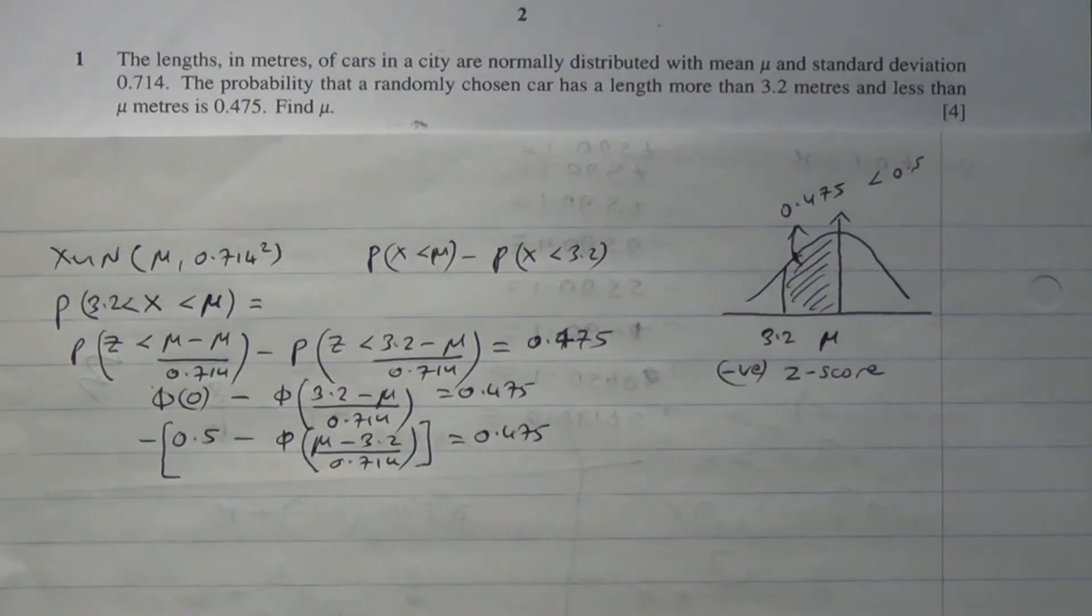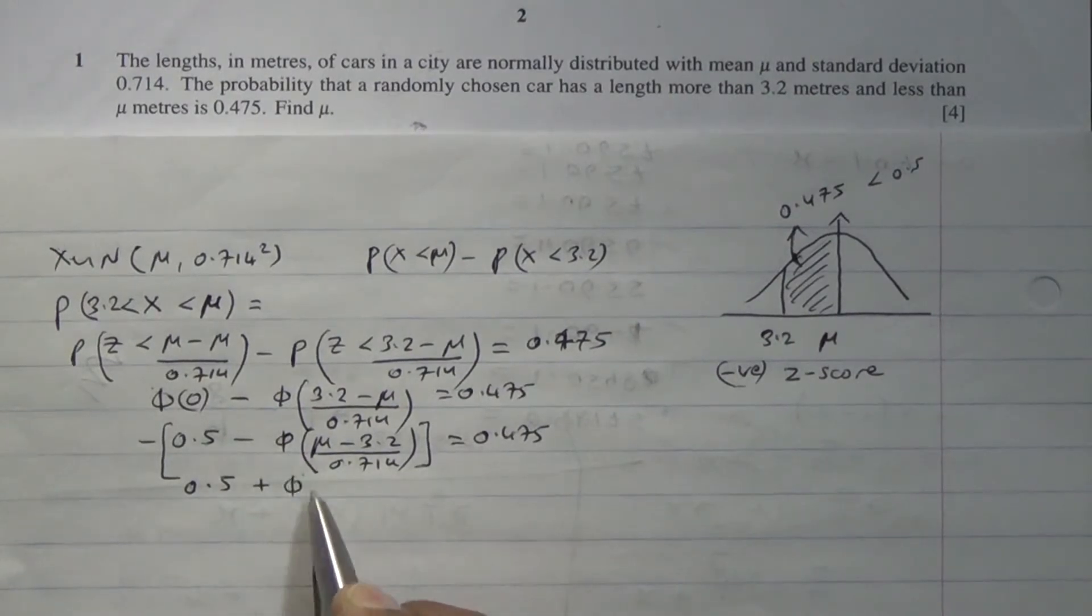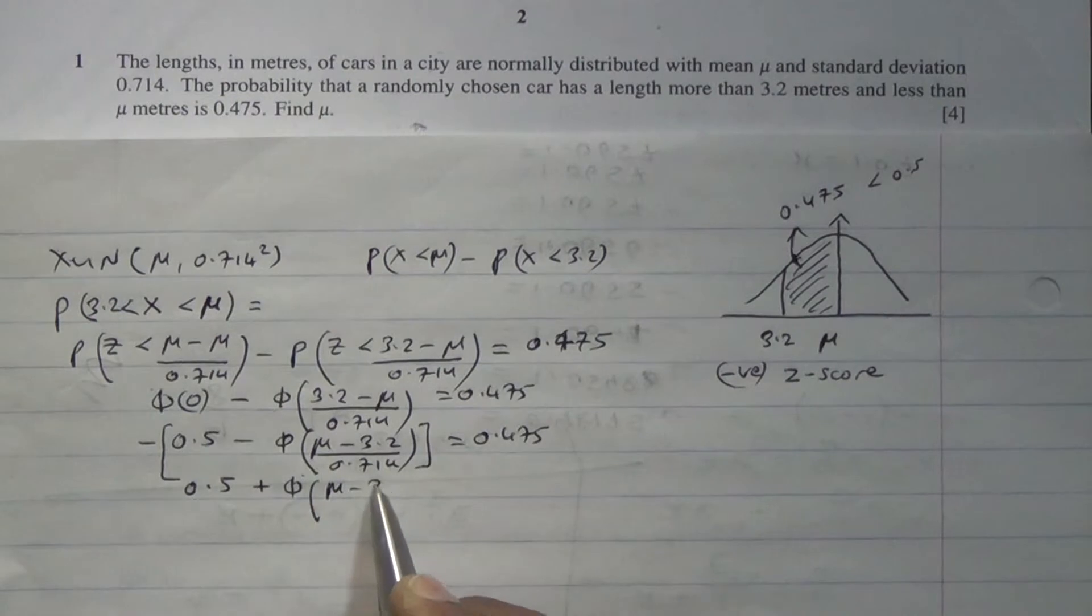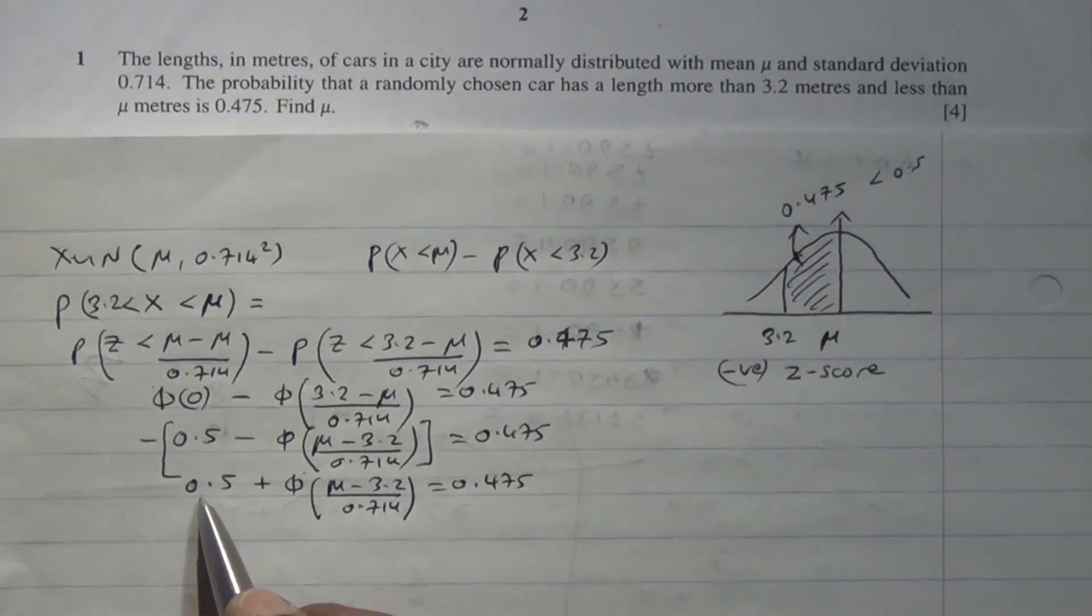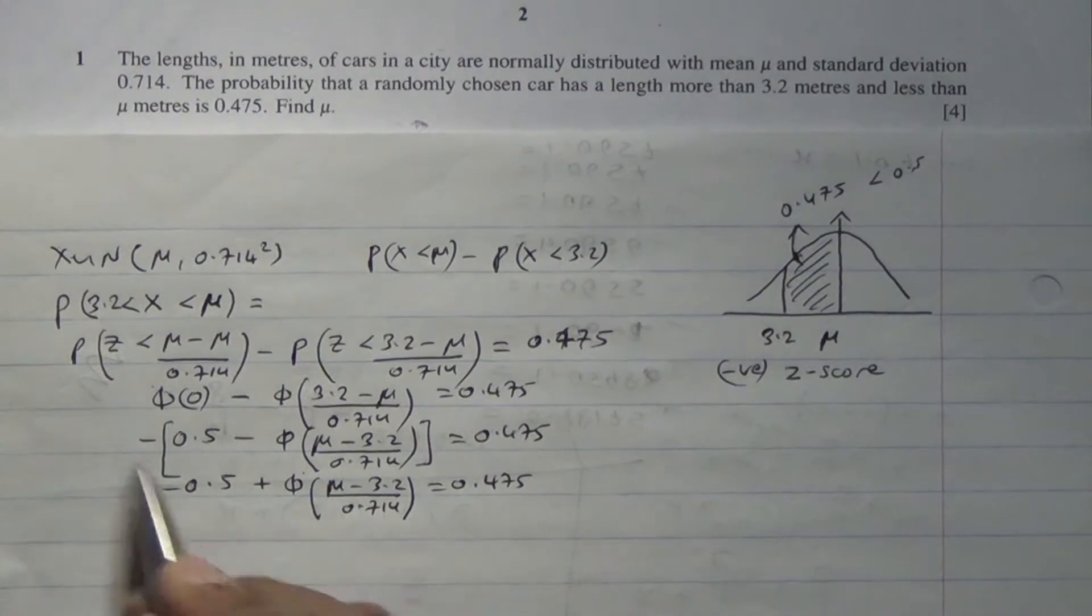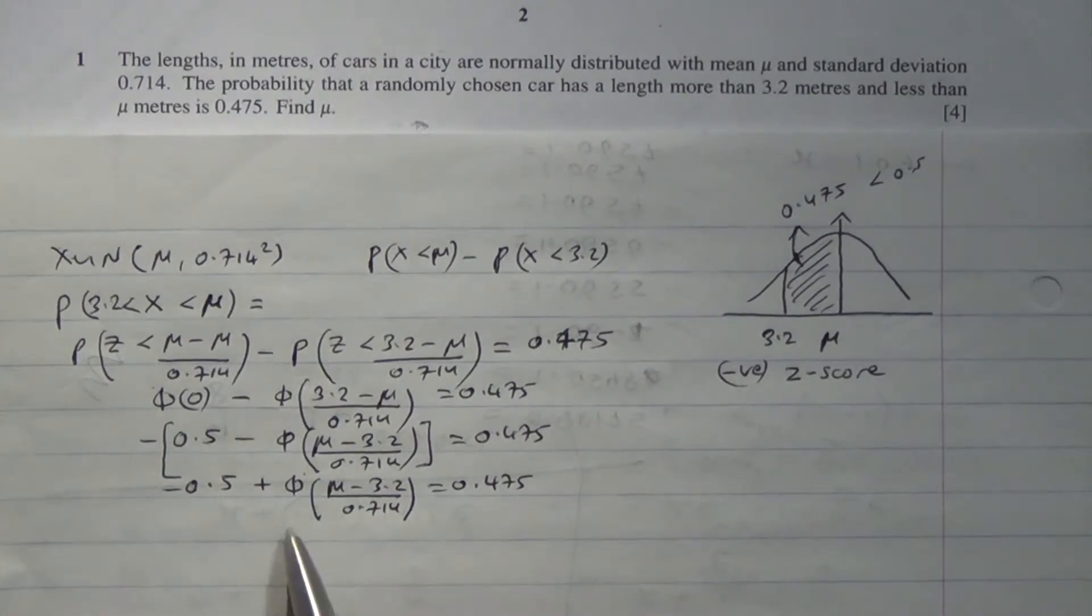Now, from here, this is 0.5 plus, what do we have? Phi of mu minus 3.2 over 0.714 is equal to 0.475. This is negative, so negative times negative. And so therefore,